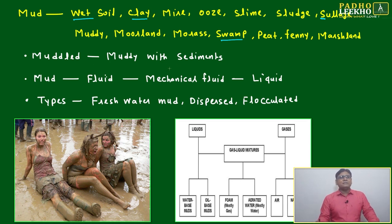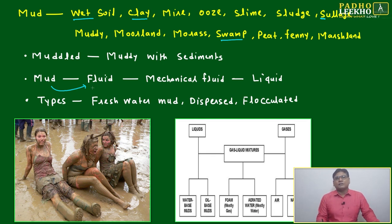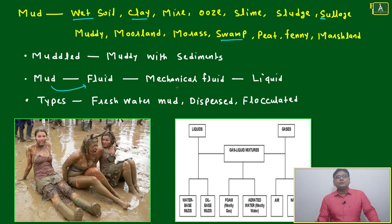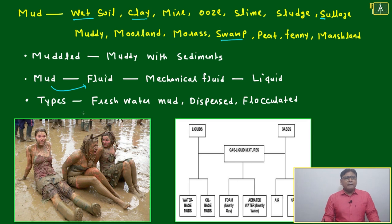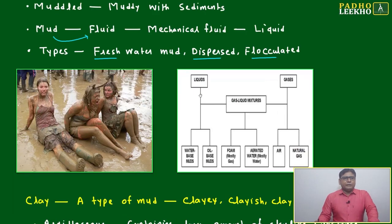Mudland, mud with sediments, mud fluid, mechanical fluid mud — if you keep on making it further dilute, this mud can create one kind of fluid, and that fluid can be used for mechanical purposes or for a liquid purpose also. The basic types of mud are three: fresh water mud, dispersed, and flocculated.